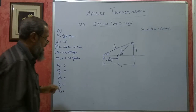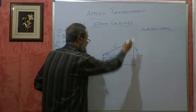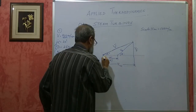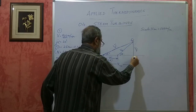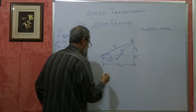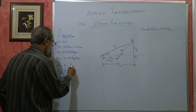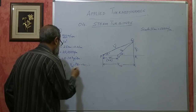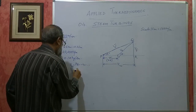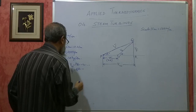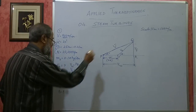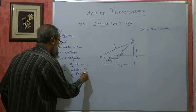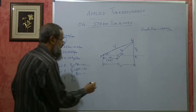Measure the lengths from the diagram and convert using the scale. Vw is PQ — measure how many centimeters it is and multiply by 100 to convert to meters per second. Vr is QS — measure in centimeters and convert. Then measure theta with a protractor. These are the values to be found from the inlet velocity triangle.